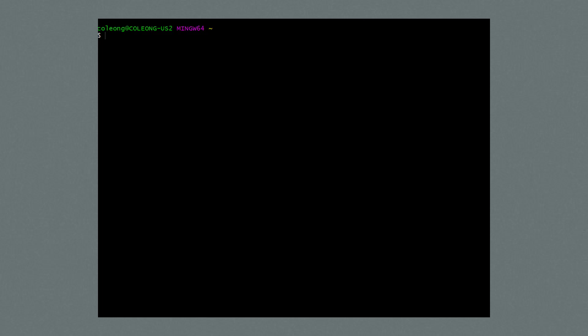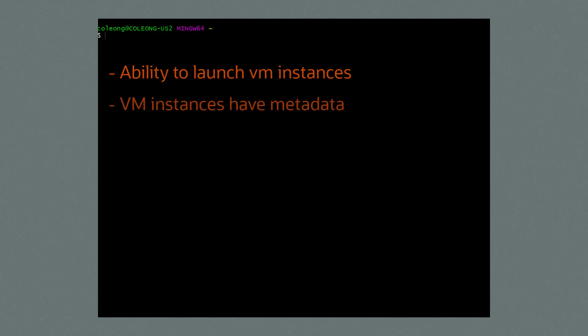The Oracle Private Cloud Appliance offers the ability to launch virtual machine instances using its compute service. VM instances have metadata which include the public SSH keys that allow a user to SSH to an instance without a password.